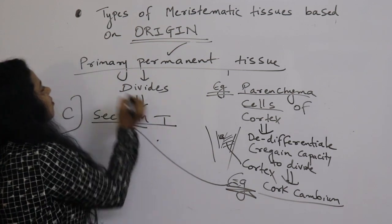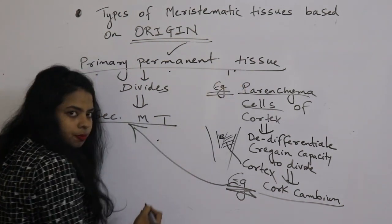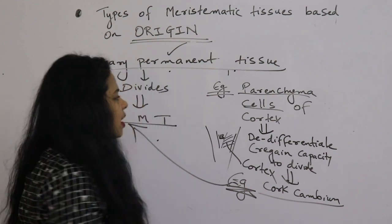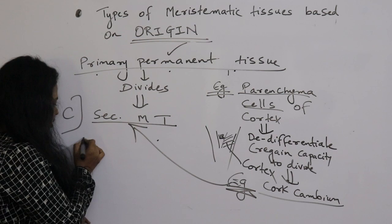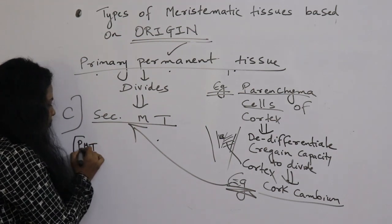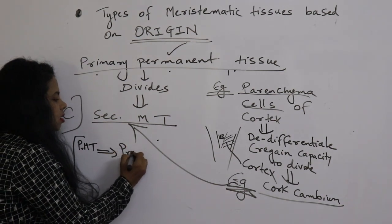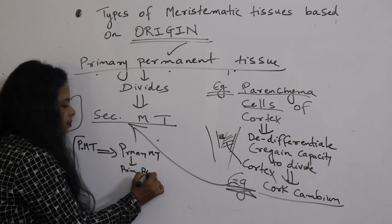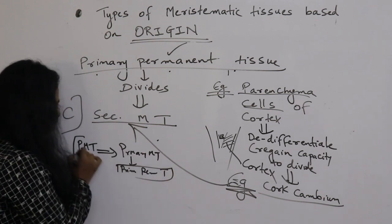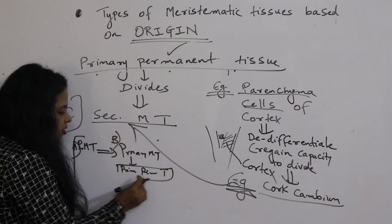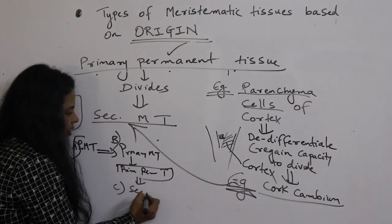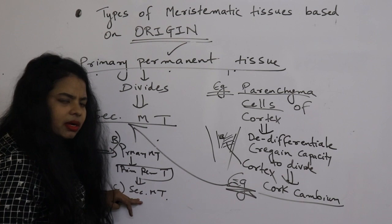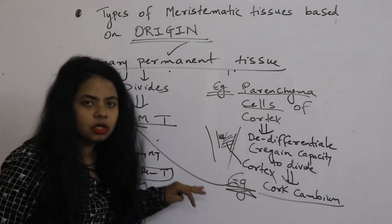To revise: you have primordial meristematic tissue (A), then primary meristematic tissue (B), then primary permanent tissue, which divides to form secondary meristematic tissue (C). So primordial forms primary, primary forms secondary, but in between there is primary permanent tissue.